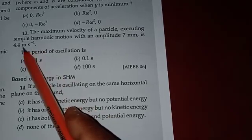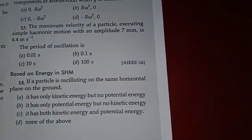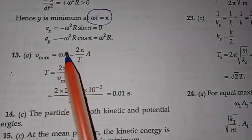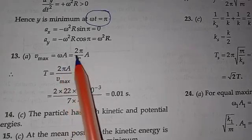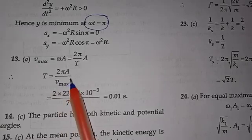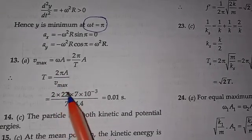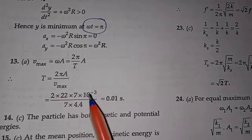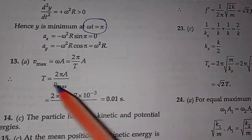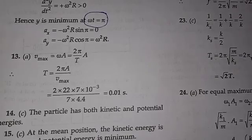Using the formula T = 2πA/v_max with amplitude 7 and v_max as the maximum velocity, the time period evaluates to approximately 0.01 seconds. Option A is correct.